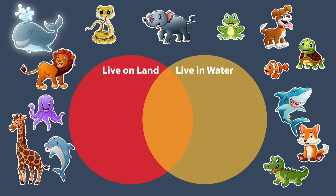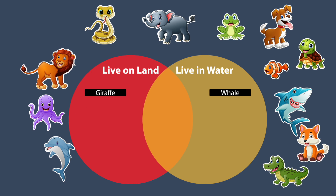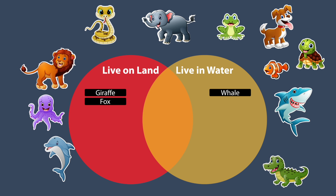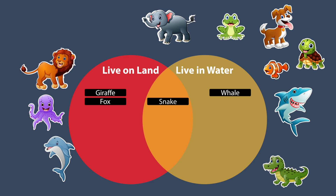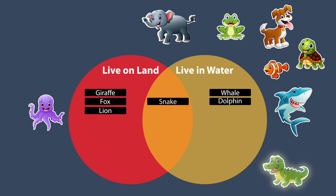Whales live in water, so they go in the yellow circle. Giraffes live on land, so they go in the red circle. Foxes live on land, so they also go in the red circle. Snakes can live in both water and land, so they go in the overlapping part. Lions live on land, so they go in the red circle. Dolphins live in water, so they go in the yellow circle. Crocodiles live on land and water, so they go in the overlapping area.